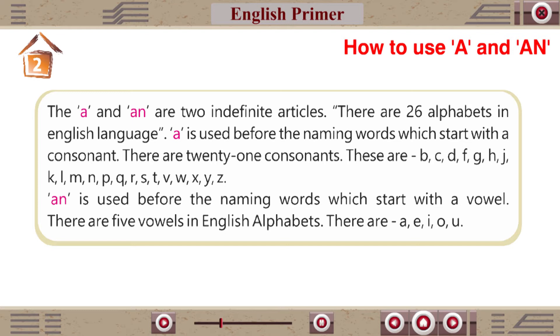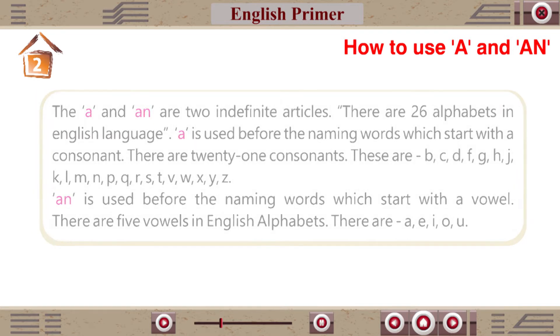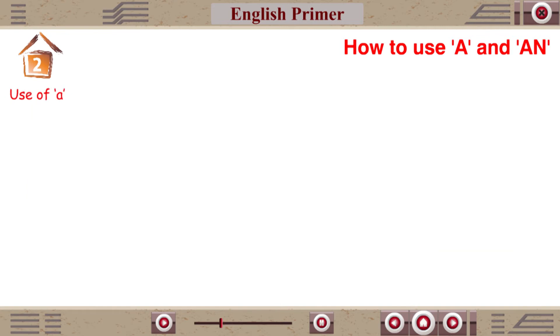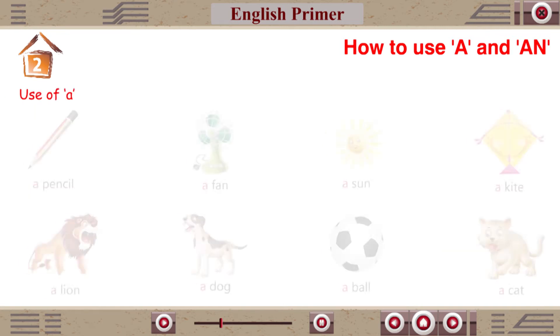There are five vowels in the English alphabet. They are A, E, I, O, and U. Use of A.